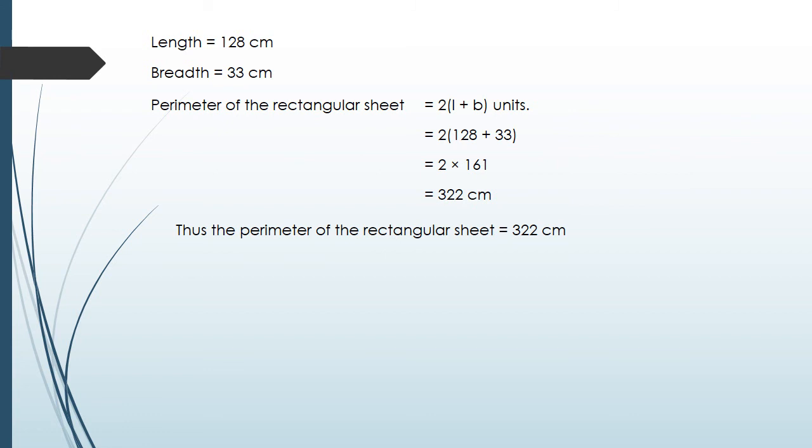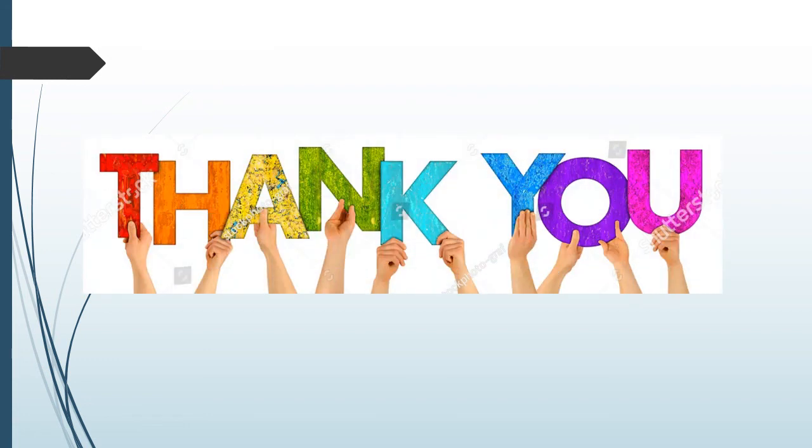The perimeter of the rectangular sheet is 322 centimeters. Thank you for watching the video.